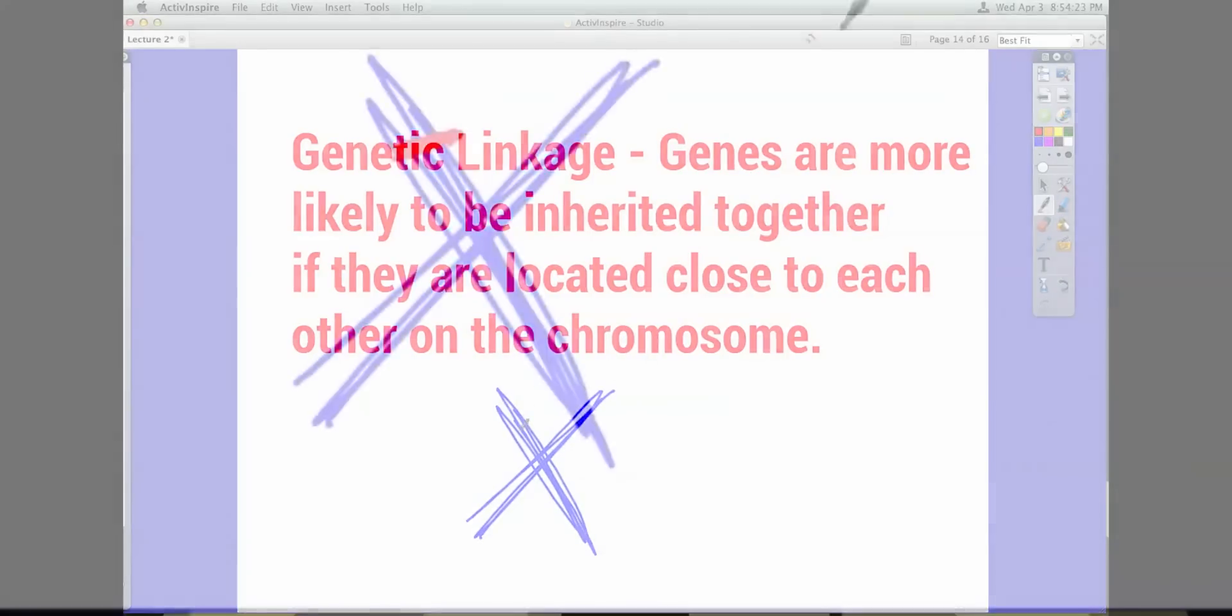For instance, if you look at this chromosome here, you can see that the red gene is far away from the orange gene. This means that these two genes are probably not genetically linked because they're far away from each other.